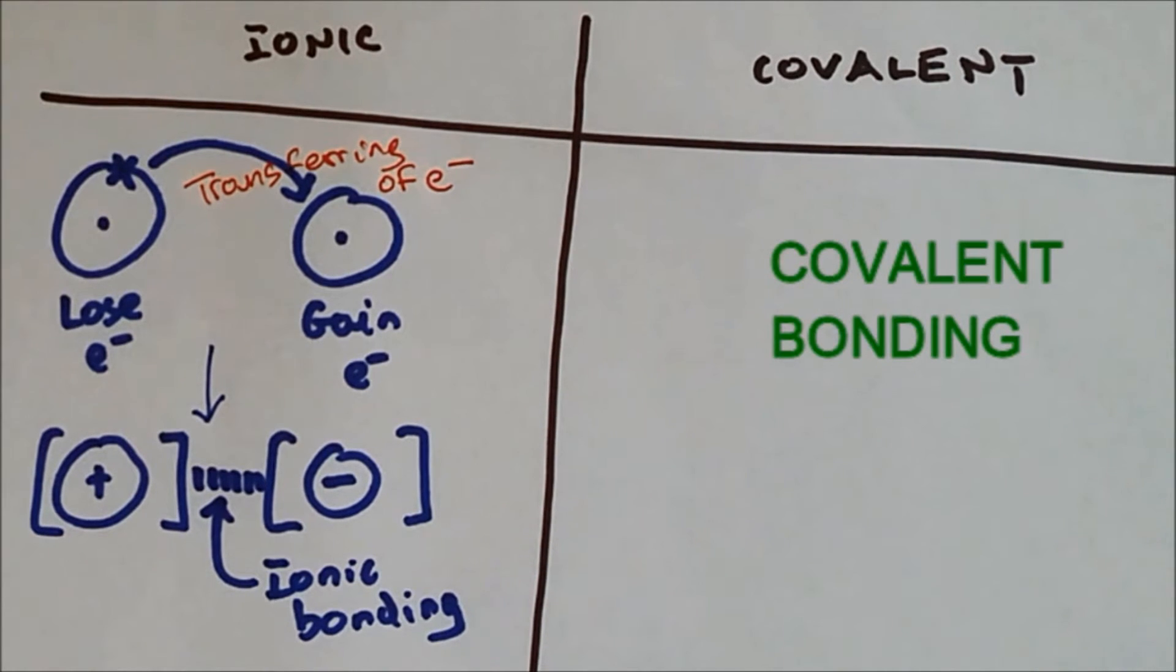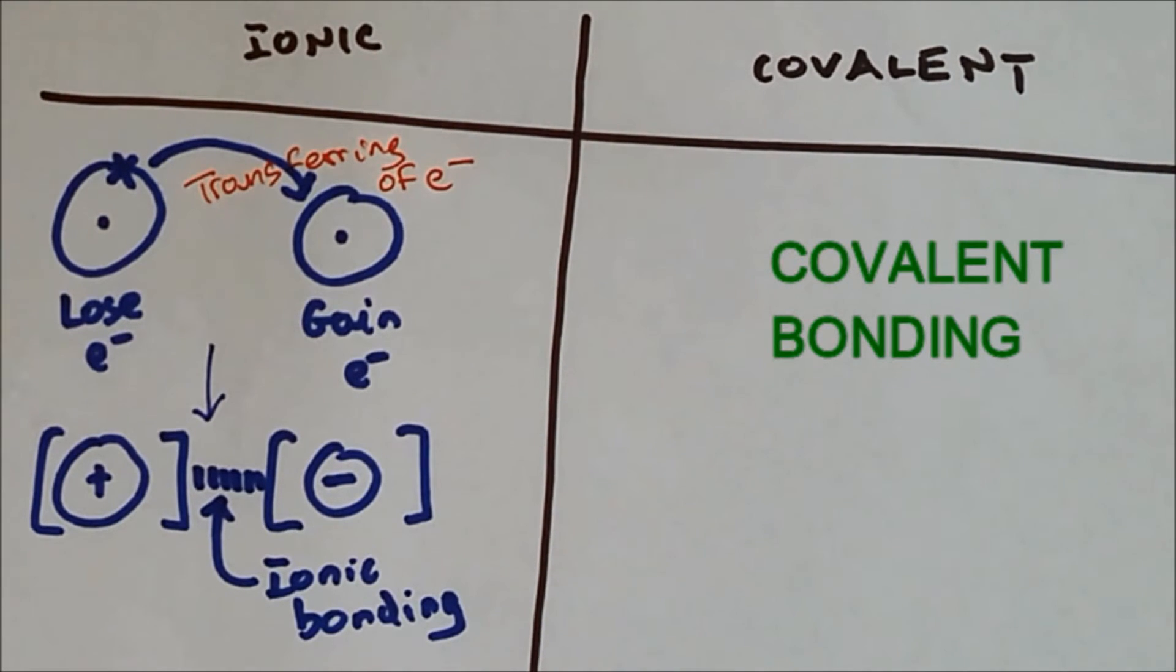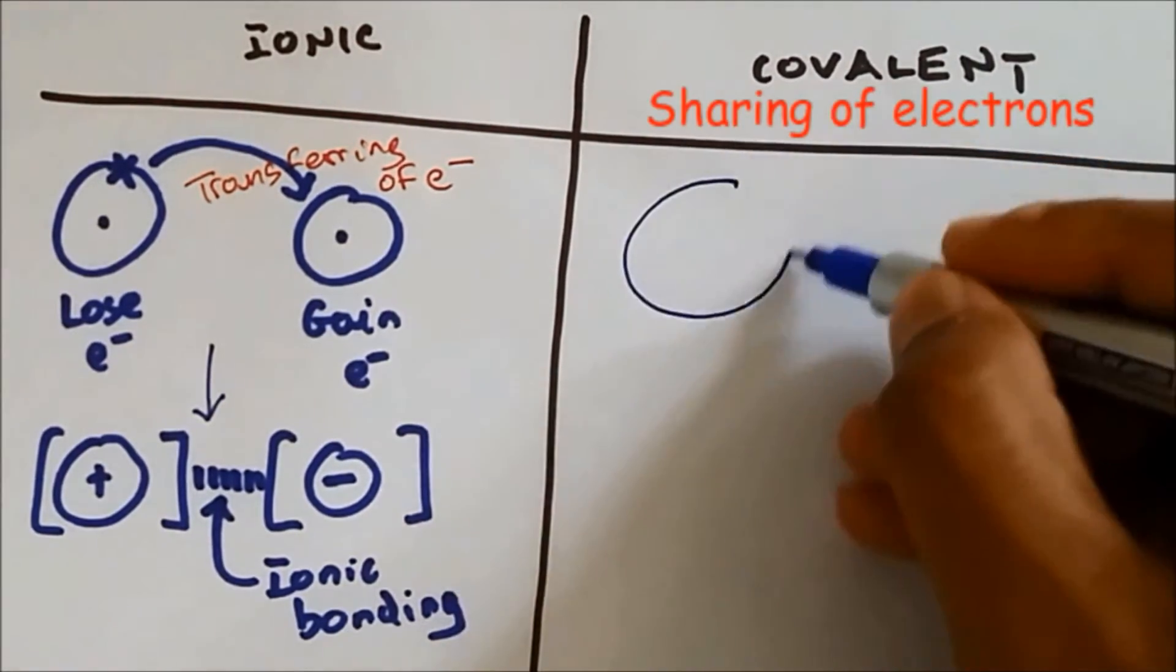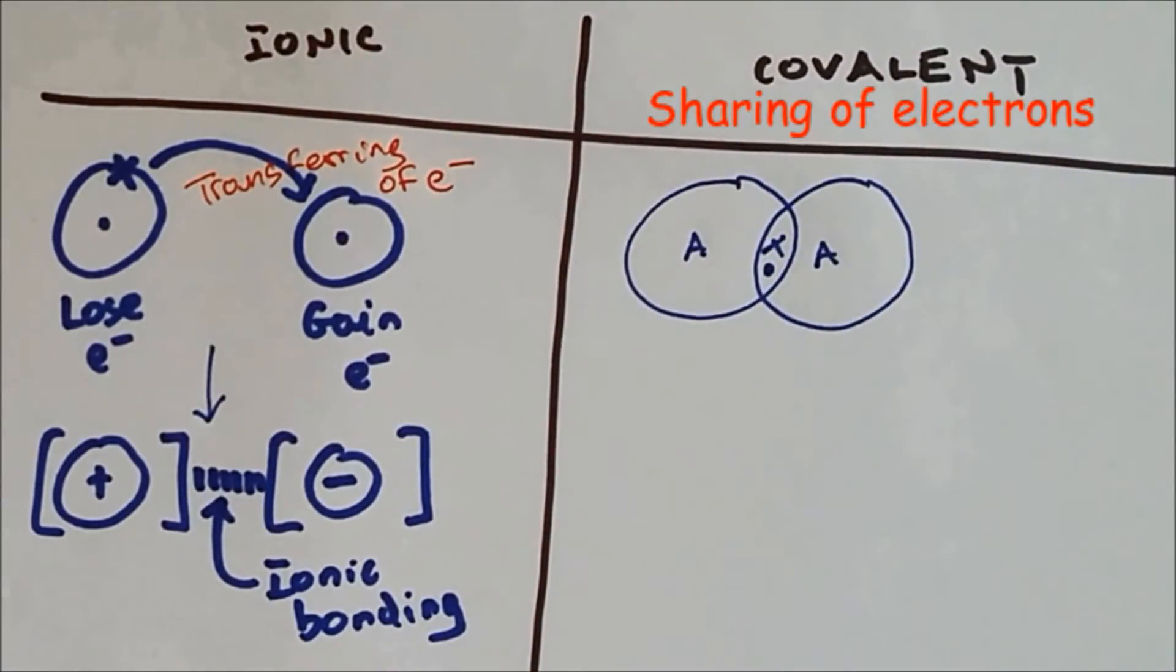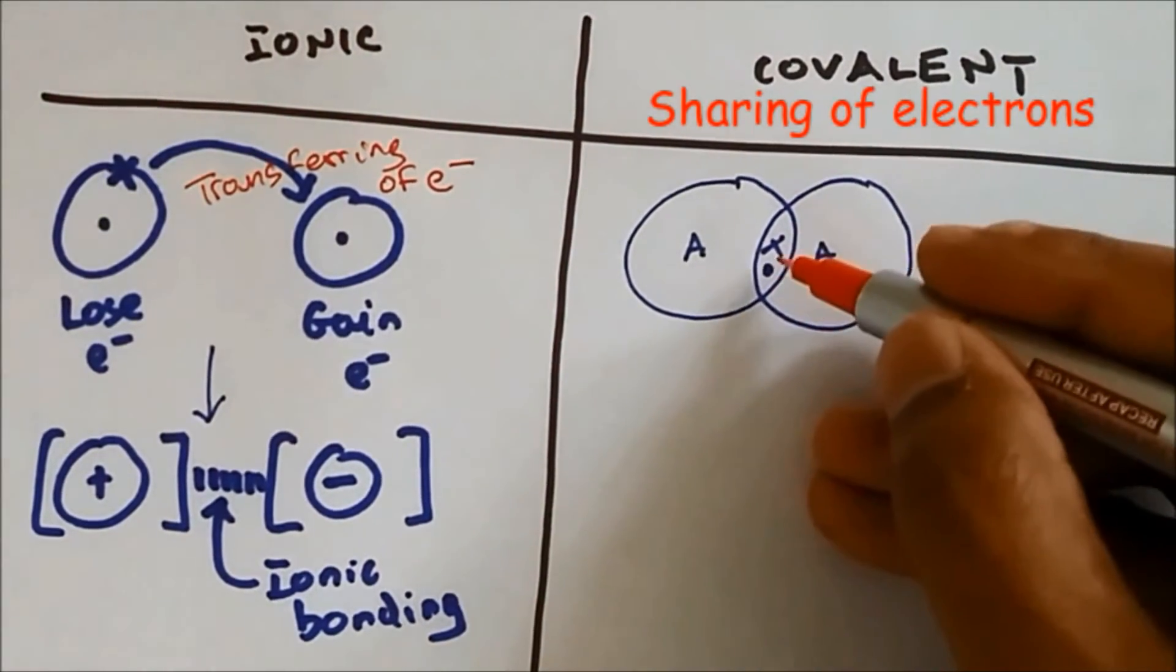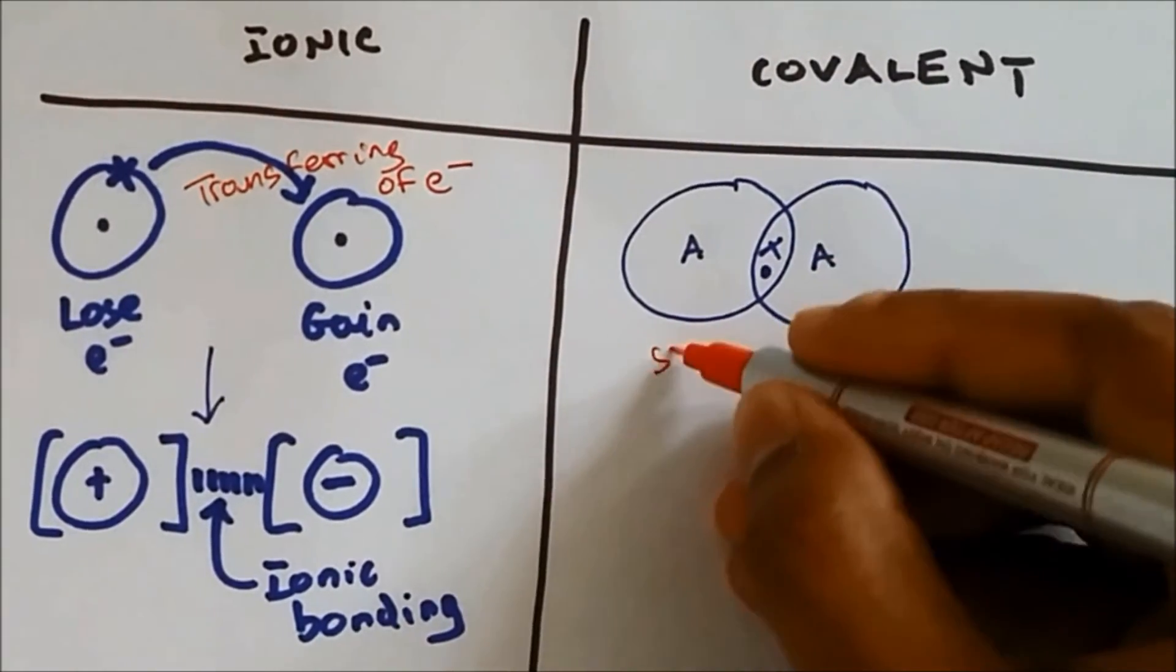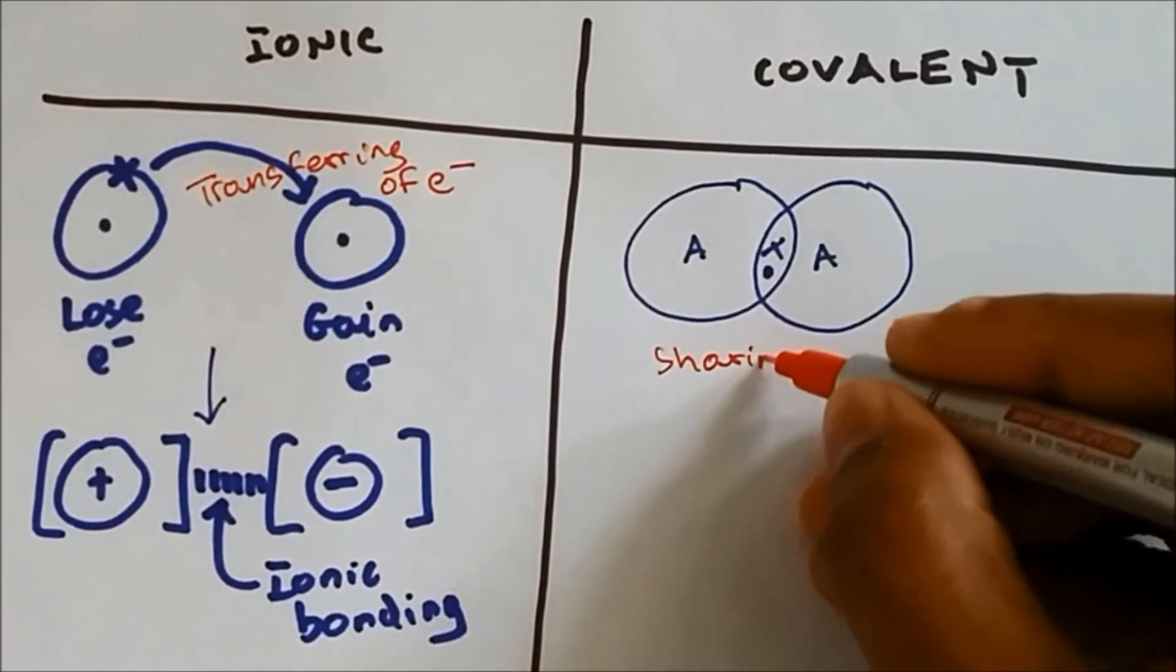When it comes to covalent bonding there is no transfer of electrons. The electrons are shared between the atoms. So you can see that in the overlap the two atoms are shared. So sharing of electrons.